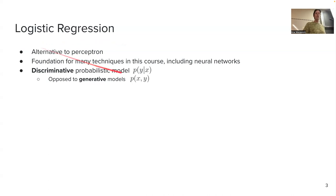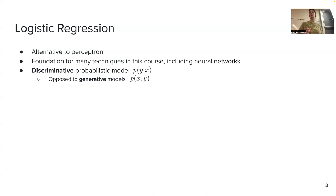A discriminative model models the probability of predicting the label given the input, unlike a generative model that tries to find the joint distribution of both things. Later, when we talk about language models and ChatGPT, those are examples of generative models, unlike logistic regression which is a discriminative model.